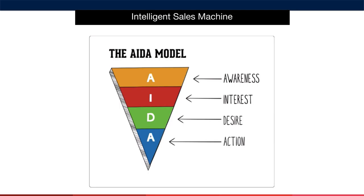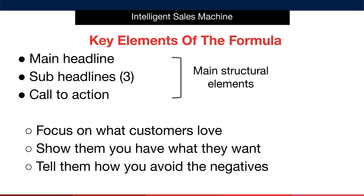Think about if you were trying to sell this product to yourself — what would you want or need to read to make you want to buy the product? Make sure that you actually use the word 'you' when you're writing your description. Imagine that you're speaking to a friend and don't write in the third person saying things like 'people' or 'customers.' Write to your customer directly; it will make your descriptions far more compelling. The main elements of your description are the main headline and main section, sub-headlines and sub-headline sections, and then a final call to action.